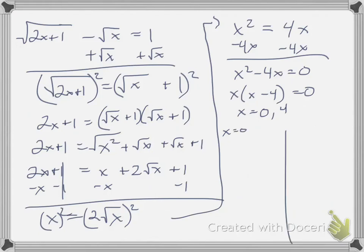Checking. Plug in 0. 2 times 0 plus 1. All that's under the radical. Minus square root of 0 is equal to 1. Square root of 1 minus square root of 0 is equal to 1. 1 minus 0 is equal to 1. That works.